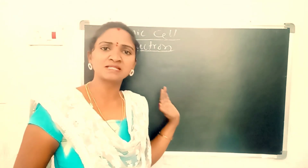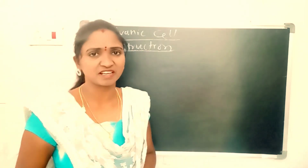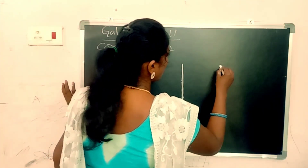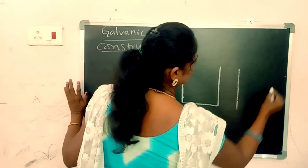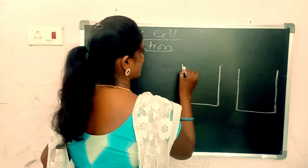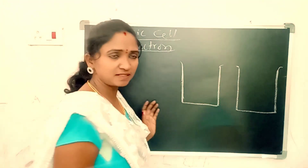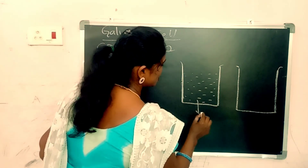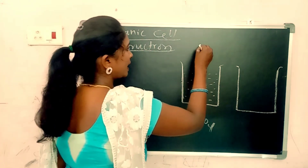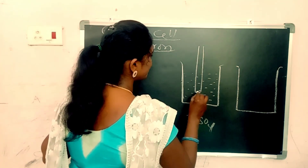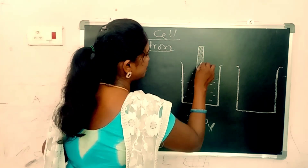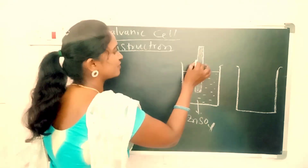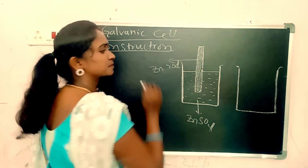The first half cell contains zinc sulfate solution, in which a zinc rod is dipped. So the first half cell contains a zinc rod or zinc electrode dipped in zinc sulfate solution.